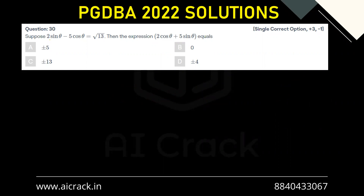Hi everyone, let's solve question number 30. Suppose 2sinθ - 5cosθ = √13, then what does the expression 2cosθ + 5sinθ equal? Let's first write down the equations: 2sinθ - 5cosθ = √13.